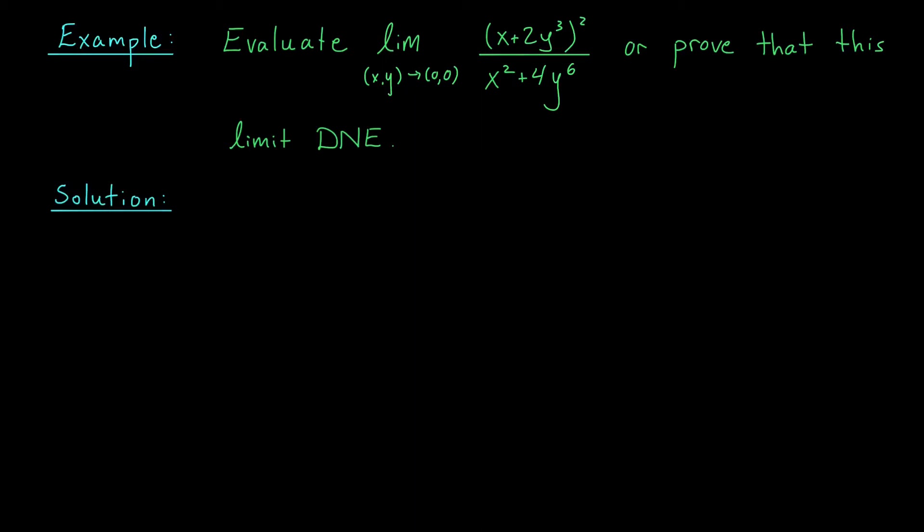Hey there, Math 237 students, Zach here. In this video, we're going to go over a couple examples involving multivariate limits. I discussed some strategies for handling limits in my last video, so check it out if you need a quick refresher. I'd like to either evaluate this nasty-looking limit at the origin, if it exists, or prove that the limit in fact doesn't exist. I encourage you to pause the video and try this example for yourself.